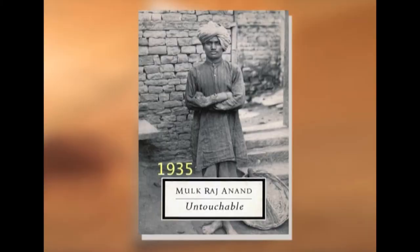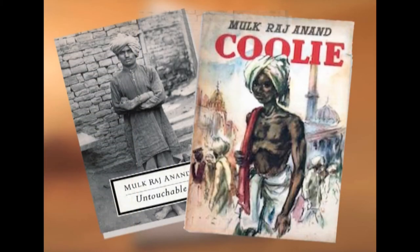Many of Anand's novels and short stories are about the poor and the downtrodden, for whom he showed great sympathy as well as admiration. His first major novel, published in 1935, was Untouchable, which described a day in the life of a young Dalit boy who works as a toilet cleaner and goes through the agony of caste discrimination.